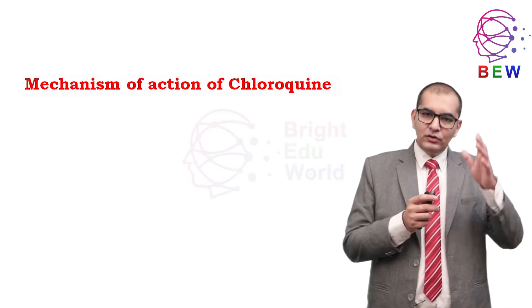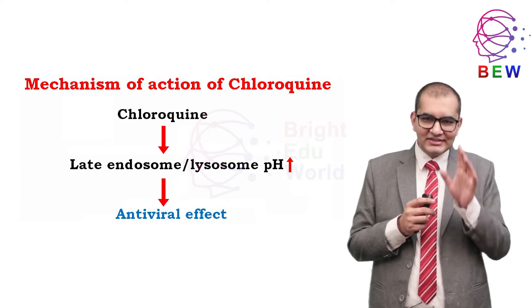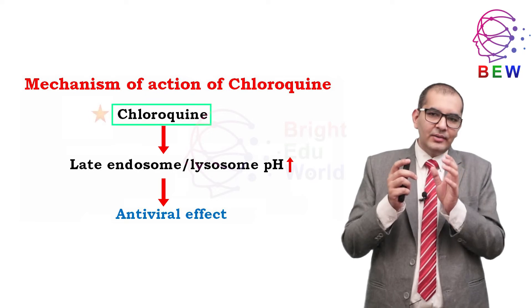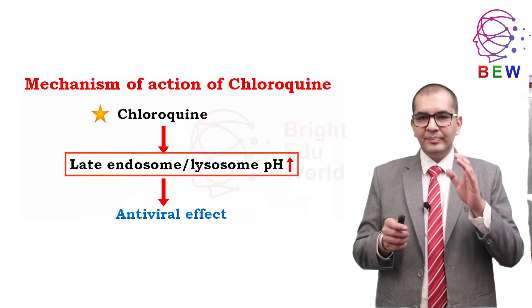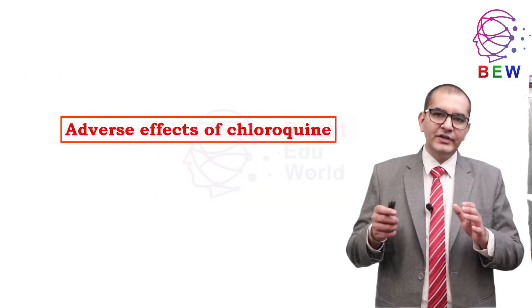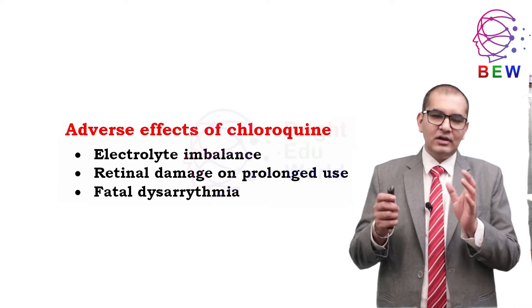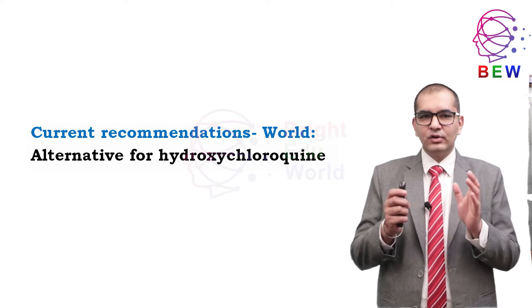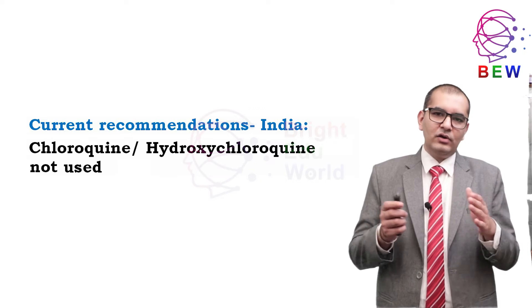A 2005 study found that chloroquine's ability to elevate endosomal pH inhibits pH-dependent steps in the viral replication process. Its mechanism of action involves elevating endosomal pH and inhibiting pH-dependent steps in viral replication. Adverse effects include electrolyte imbalance, retinal damage on prolonged use, and fatal dysarrhythmias. Chloroquine may be used as an alternative if hydroxychloroquine is unavailable, but in India, chloroquine and hydroxychloroquine are not currently recommended.